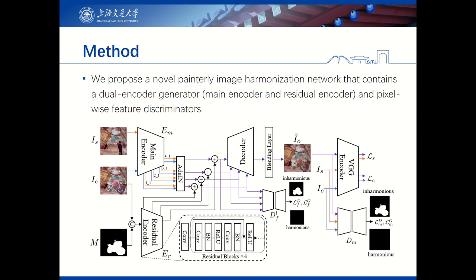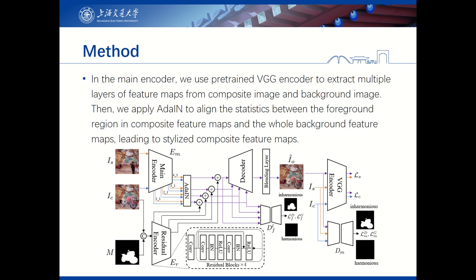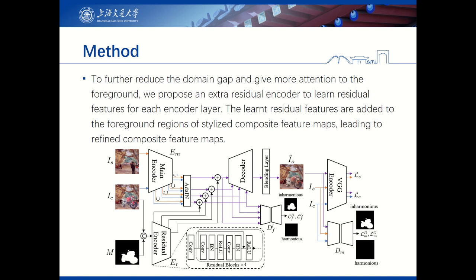We propose a novel Painterly Image Harmonization network that contains a dual encoder generator — a main encoder and a residual encoder — and pixel-wise feature discriminators. In the main encoder, we use a pre-trained VGG encoder to extract multiple layers of feature maps from the composite image and background image. Then we apply AdaIN to align the statistics between the foreground region of composite feature maps and the whole background feature maps, leading to stylized composite feature maps. To further reduce the domain gap and give more attention to the foreground, we propose an extra residual encoder to learn residual features for each encoder layer. The learned residual features are added to the foreground regions of stylized composite feature maps, leading to refined composite feature maps.